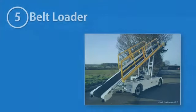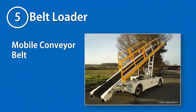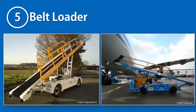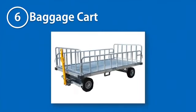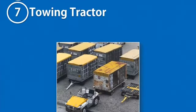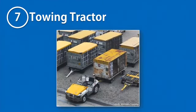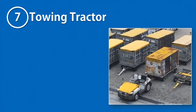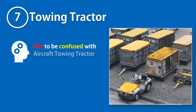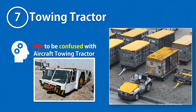A belt loader is a mobile conveyor belt used for loading passenger luggage in narrowbody aircrafts. An associated non-motorized piece of equipment with the belt loader is the baggage cart, which is simply a cart on wheels for storing luggage. The baggage cart is towed by a towing tractor, which is a smaller version of the pushback tractor and a commonly used vehicle on the ramp for towing other ground support equipment.